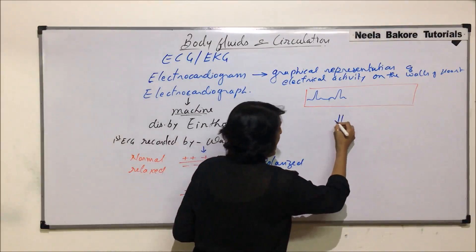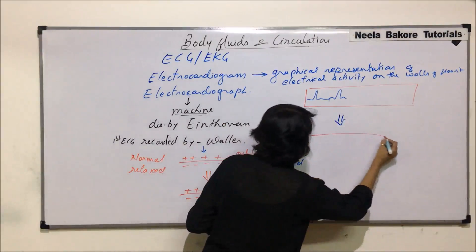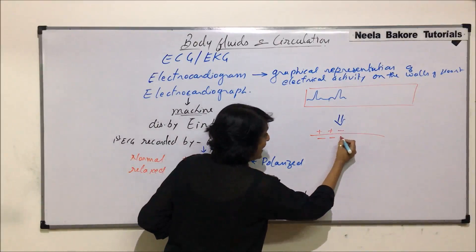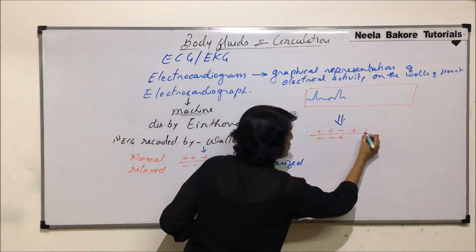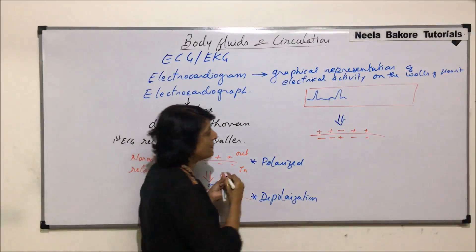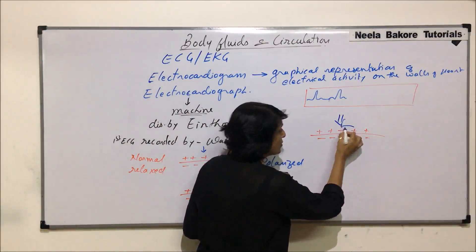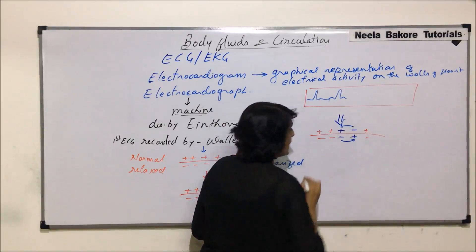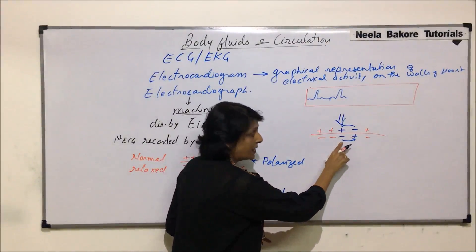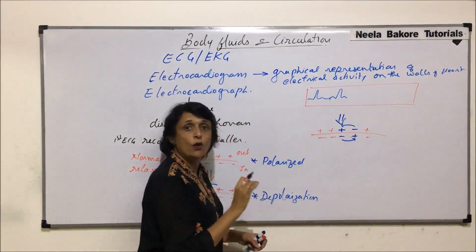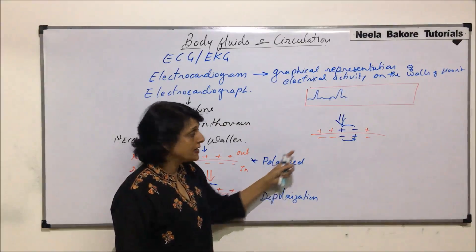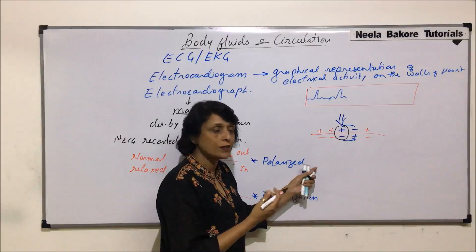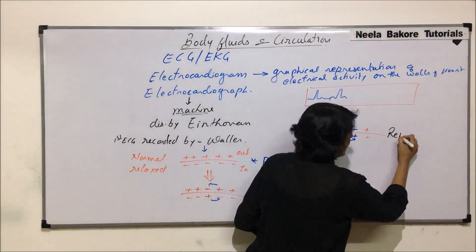Let us draw the same thing and see what happens next. The conduction is taking place — the positive charge moves along, so depolarization shifts from one position to the next. The original situation we call polarized, when the charges flip we call it depolarized, and when these charges come back to their original form — outside positive, inside negative — then we call it repolarization.